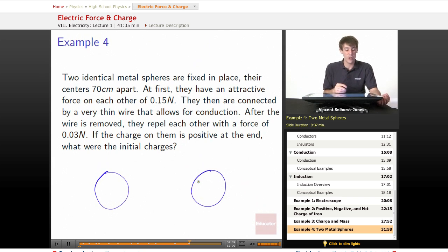At first they have an attractive force on each other of 0.15 newtons. We're going to assume gravity is not affecting this, so the only thing attracting them is the force of electricity. So if they've got an attractive force, what does that mean about those charges?